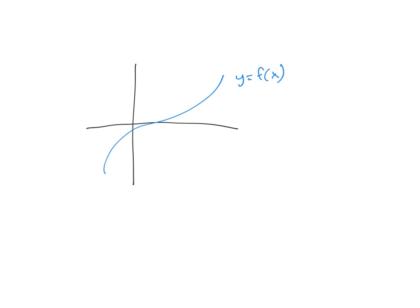We found that f prime of x evaluated at an x value a gave us the slope of the tangent line at x equals a. We first evaluated derivatives by a limiting process, taking the slopes of secant lines in between a and a point close to a.